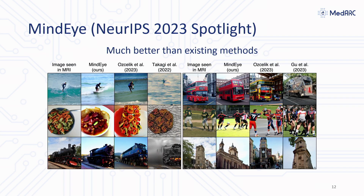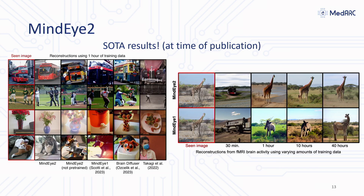Our results significantly beat the state-of-the-art, and our reconstructions are very close to the actual images that the person was seeing — just from brain activity — using the latest diffusion models and CLIP multimodal models. We're also improving upon it and developing new methods that allow us to use even less data to accomplish this.